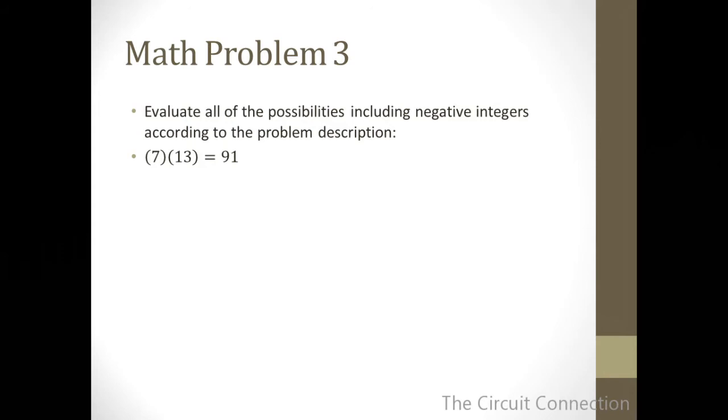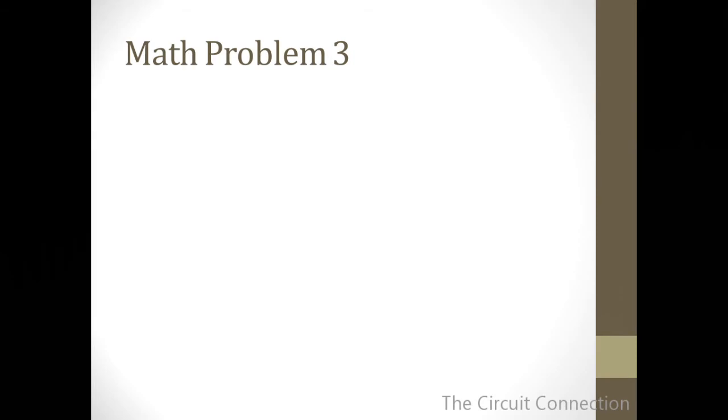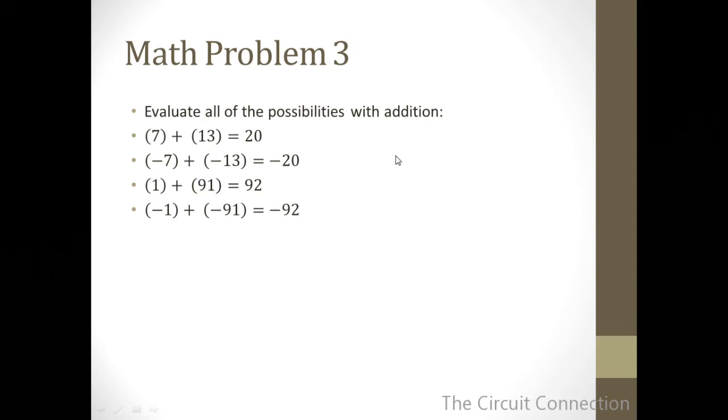First, 7 × 13 = 91. That meets the criteria for the product. Negative 7 times negative 13 is also 91. That meets the criteria. 1 × 91 = 91. That meets the criteria. And negative 1 times negative 91 equals 91. That also meets the criteria. Now, what we're going to do is sum those numbers up together that we had paired up as being multiplied by each other. We're going to evaluate those possibilities with addition. 7 + 13 = 20. Negative 7 plus negative 13 equals negative 20. 1 + 91 = 92. And negative 1 plus negative 91 equals negative 92.